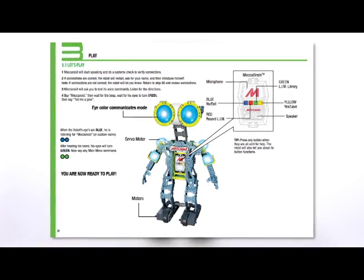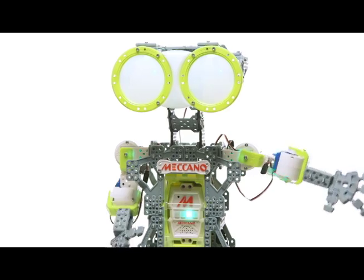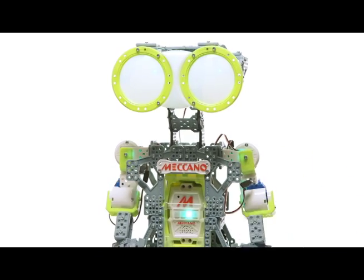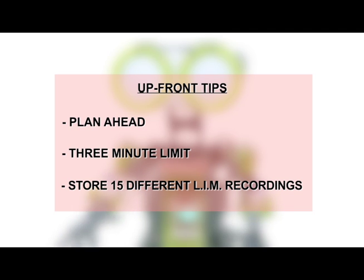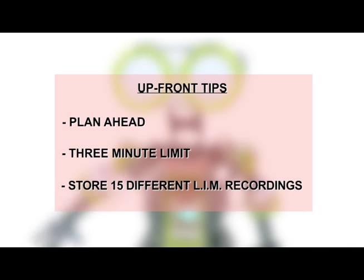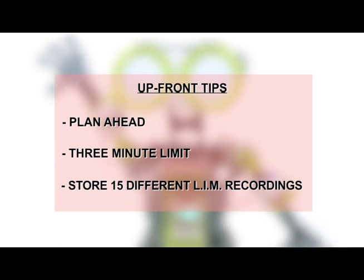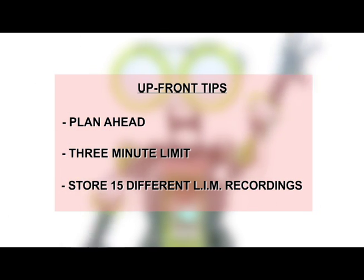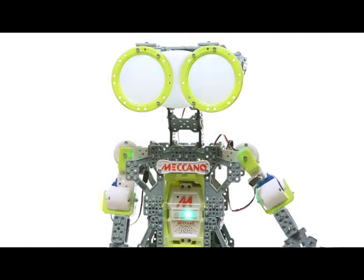LIM allows you to create and record animations by physically moving the robot and recording sounds into its mechabrain. When you activate LIM, Mechanoid will immediately record all movements and sounds, so plan ahead and know what movements and sounds you want to program. You can record up to three minutes for each LIM recording. You can name and save up to 15 different LIM movements on the mechabrain, and you can access them by voice command through the LIM library.